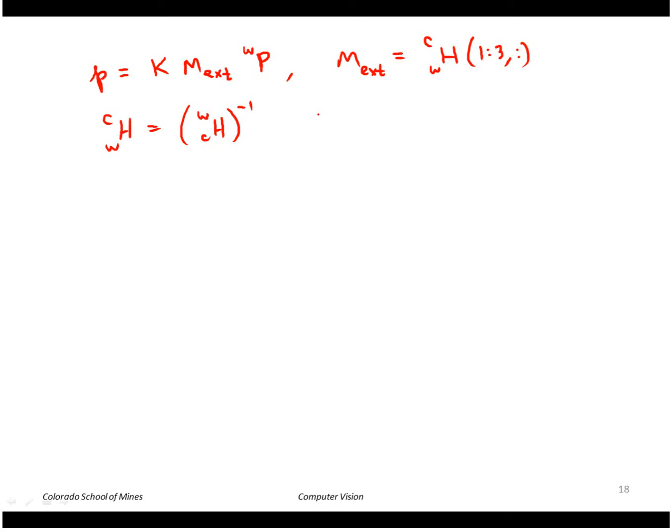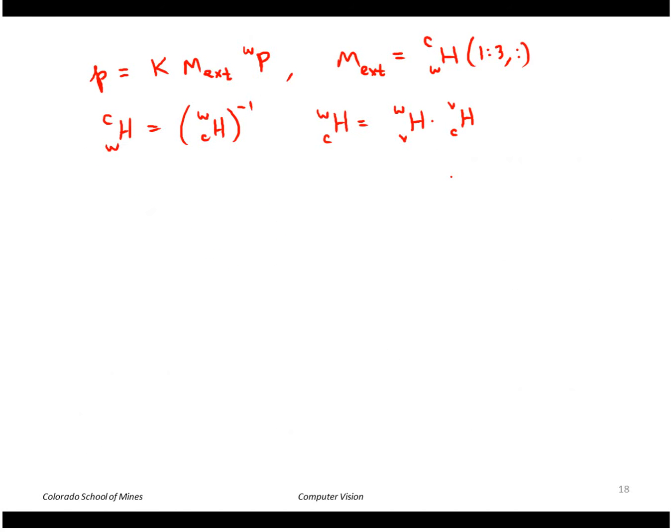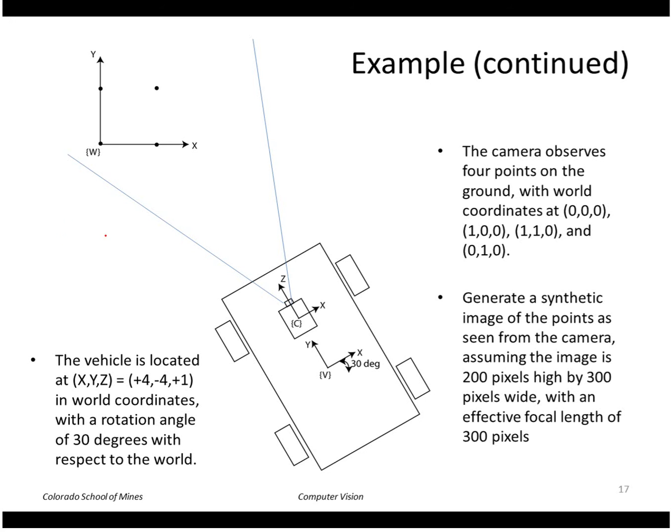So the camera to world transform is given by the vehicle to world times the camera to vehicle. So looking at the first one, the vehicle to world, that is composed of a rotation matrix from vehicle to world and the translation of the vehicle in the world.